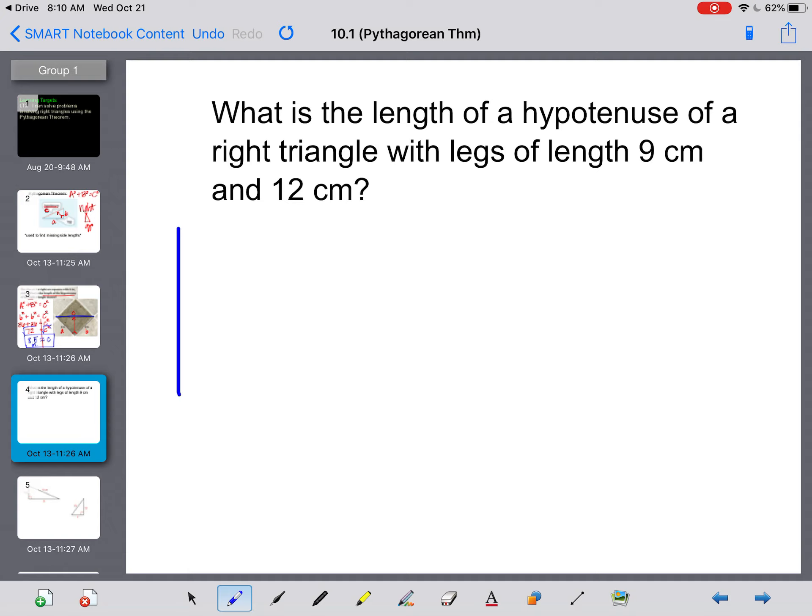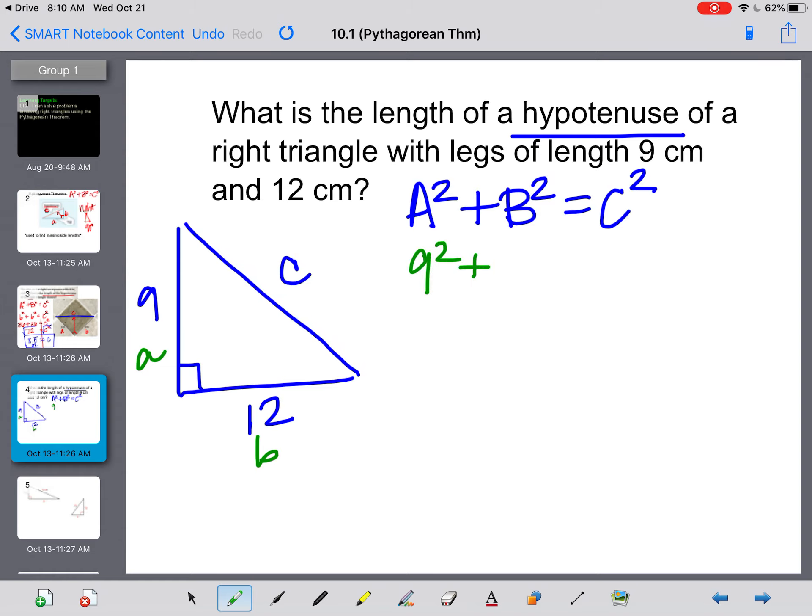What is the length of a hypotenuse of a right triangle with legs of length 9 centimeters and 12 centimeters? I'm going to draw this right triangle to the best of my ability. What is the length of the hypotenuse? So this is what I don't know, telling me that the legs are 9 and 12. Doesn't really matter which one's which. And then I always write down my formula so that I don't forget what I'm plugging in. I'm going to call this A and this B. So when I plug in, I know what I'm doing. I have 9 squared plus 12 squared equals C squared. 9 to the second power is 81. 12 to the second power is 144.